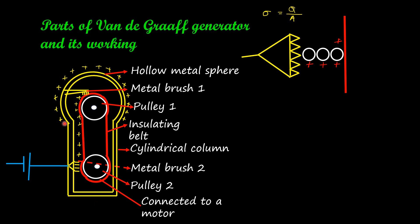From the bristle tips, charge moves on to the surface of the metal sphere, where it is uniformly distributed. The potential on the surface equals the potential inside the hollow sphere — inside the sphere there is no charge but it has potential. The direction of motion of the belt bearing positive charge is upward on the left-hand side. The positive charges are transferred to the metallic sphere, and as the belt moves downward on the right-hand side, the charge it develops is negative.